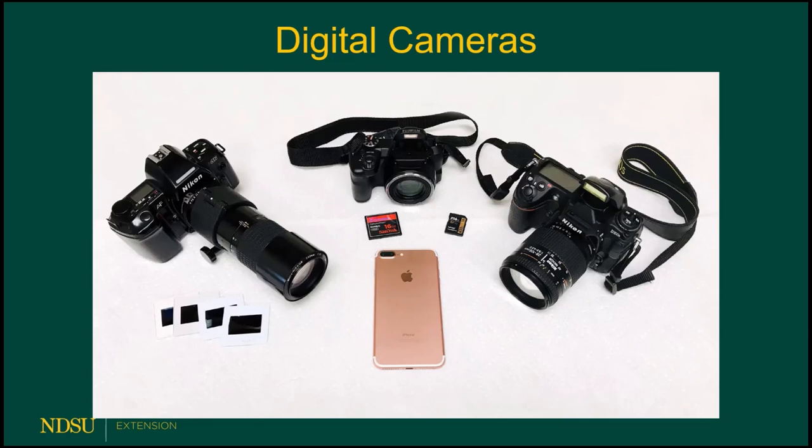But what we're going to focus on today is using a smartphone camera. The phone pictured here is the iPhone 7 Plus. If you look at the top left of the phone, you'll see a dark oval — there are two lenses behind that oval, a normal lens and a telephoto lens. Behind those lenses is a 12.2-megapixel sensor. So that iPhone camera is almost as good as that Nikon on the right.